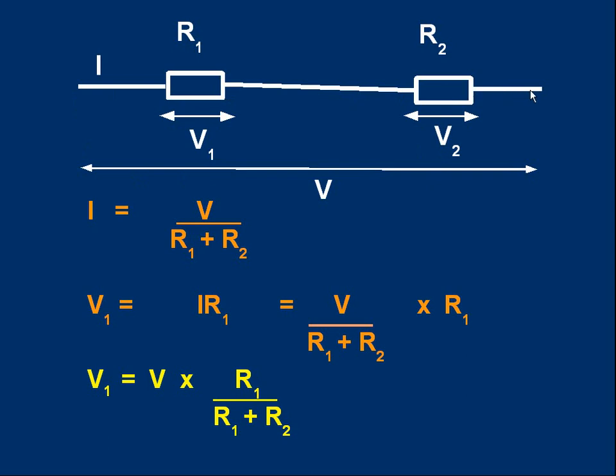First of all, let's get an expression for the current I. Well, I is the total voltage over the total resistance. It's V divided by R1 plus R2 because the resistors are in series. Now, how do I work out V1? Well, voltage 1, V1, is the current through resistor 1 times the value of resistor 1. It's I, which we've already got an expression for, times R1. So it's this, V over R1 plus R2, which is I, times R1.